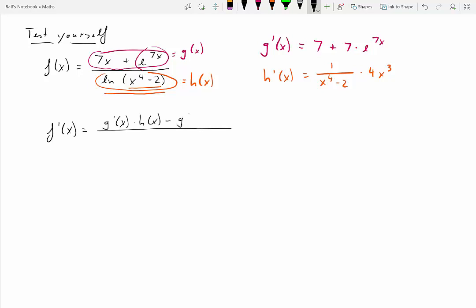I'll state it first. It's supposed to be good if you just write it down a few times, so you internalize what it looks like. Here we go. And all we need to do now is to plug all our ingredients in. So g prime of x, so that's 7 plus 7 times e to the 7x times h of x, which is log of x to the 4 minus 2. So what we've done so far is calculated this first part up here, g prime of x times h of x.